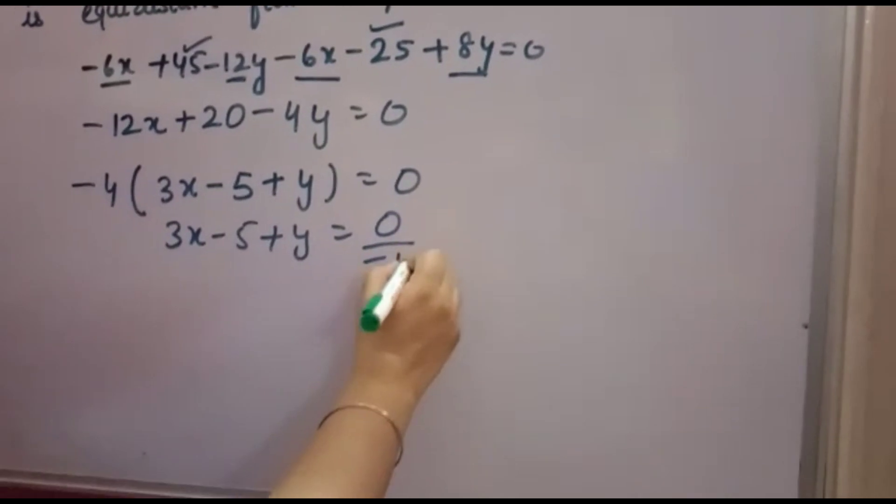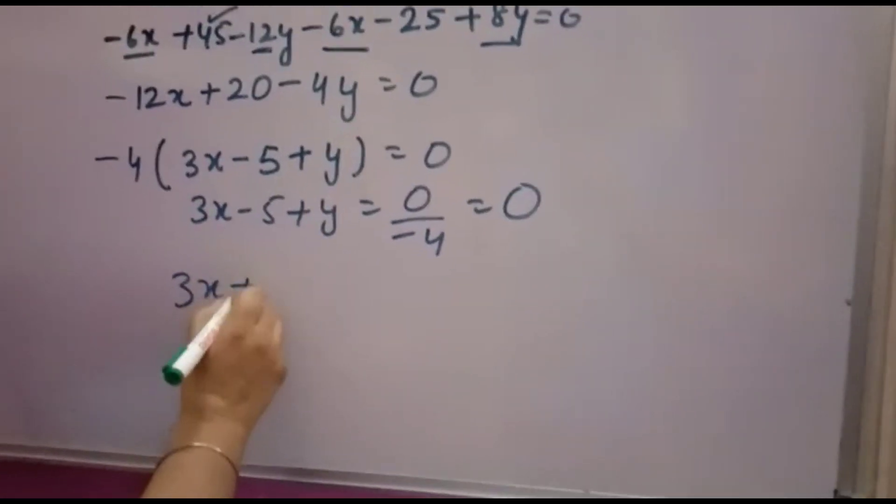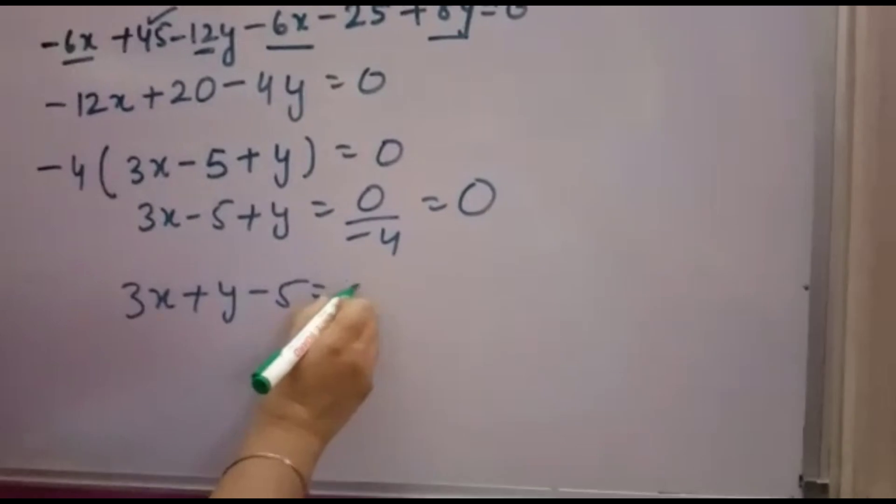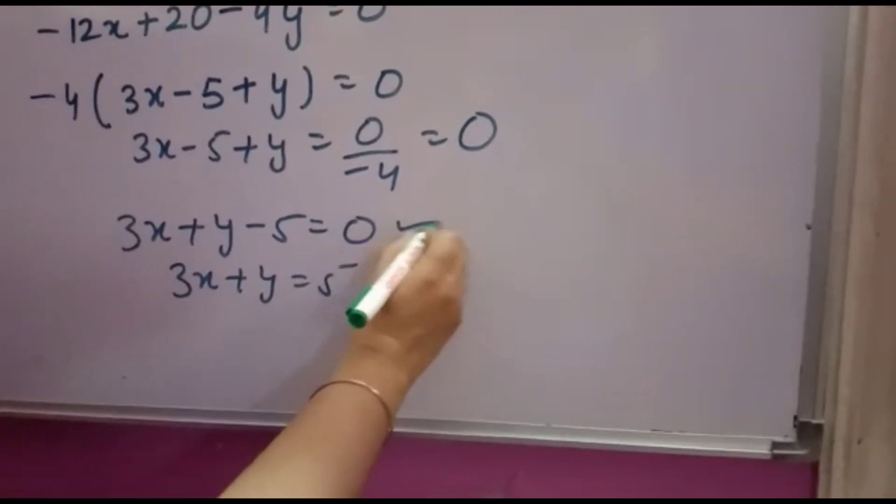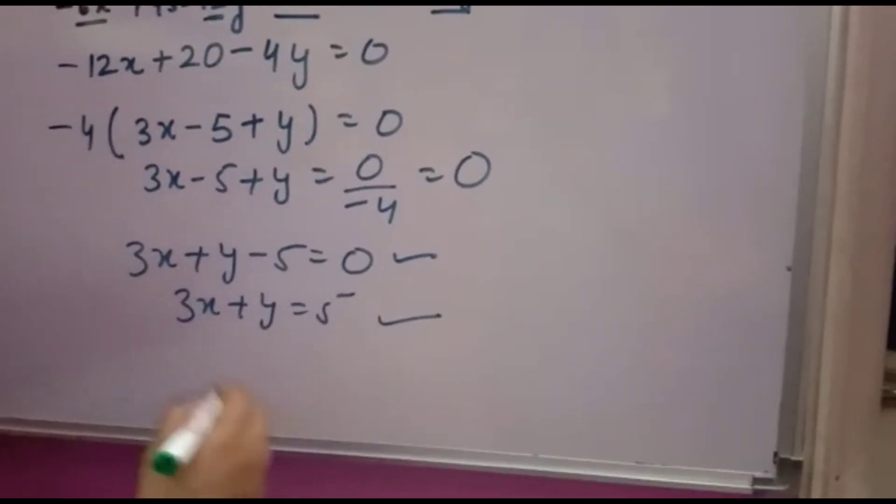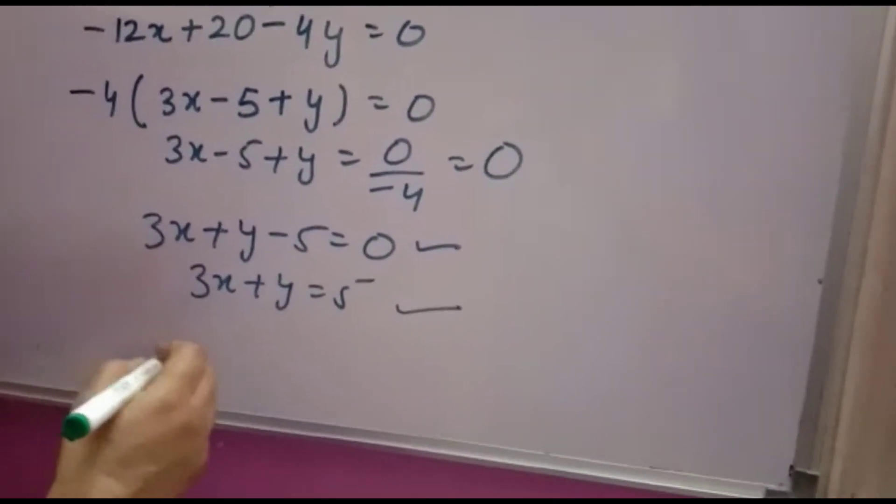So 3X minus 5 plus Y equals 0 over minus 4, that will come to 0. So 3X plus Y minus 5 equals 0, or you can write 3X plus Y equals 5. Both are correct. So like this you have to solve this question. Thank you.